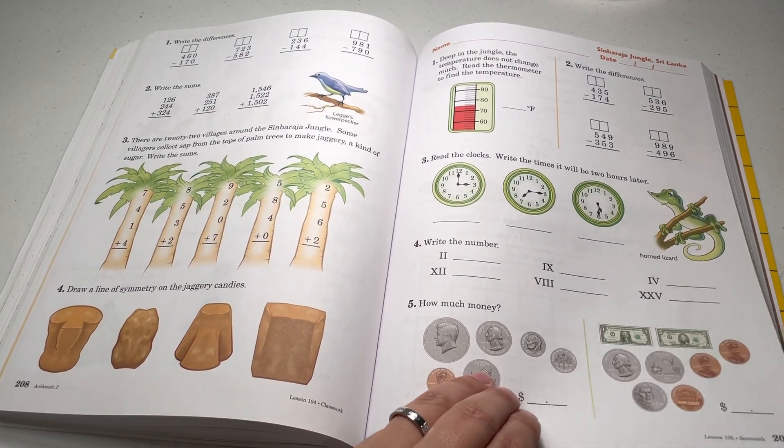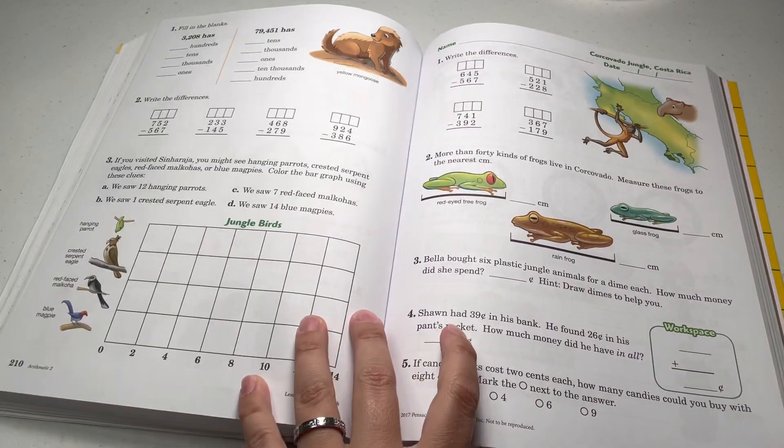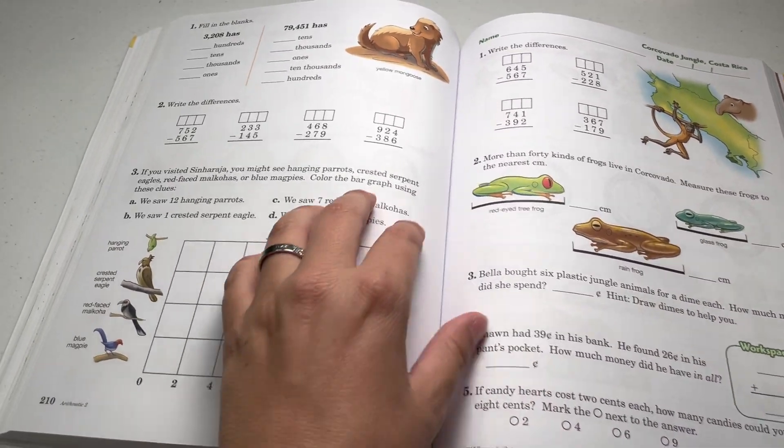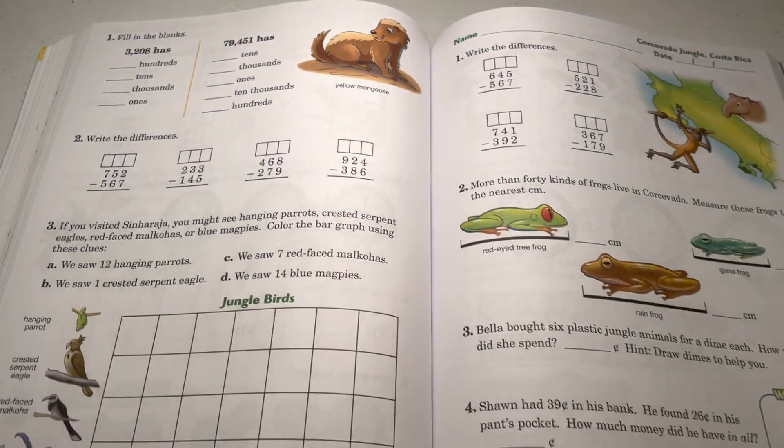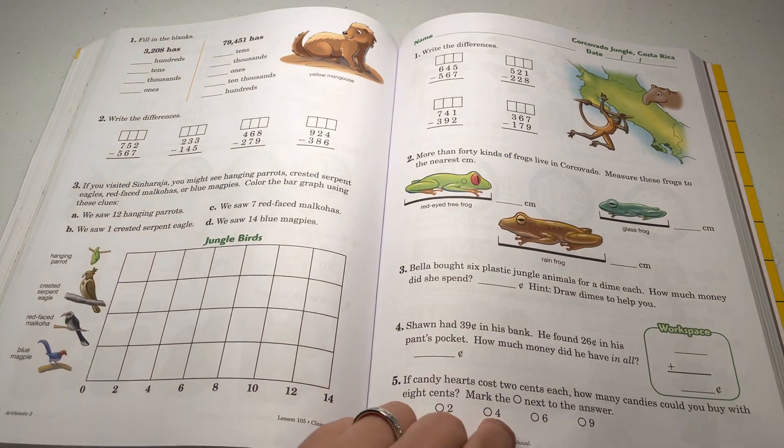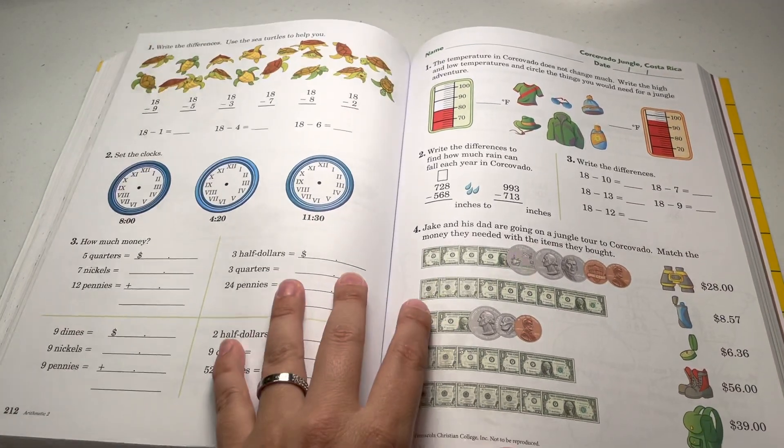You can see here they're under Roman numerals. Okay.